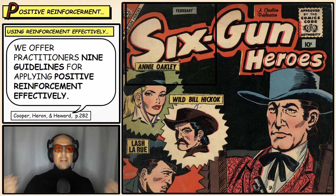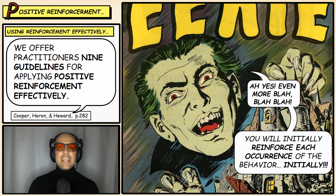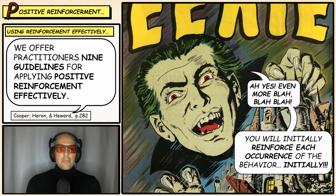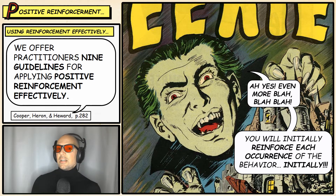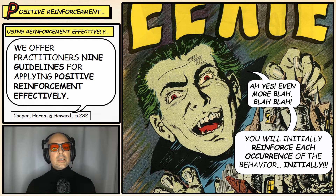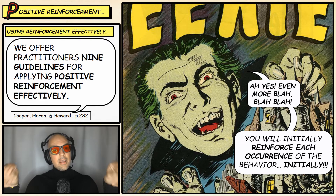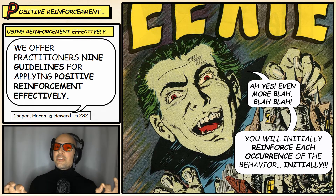Guideline number six: initially reinforce each and every occurrence of the behavior. The key word is initially — eventually we want to move to intermittent reinforcement, where not every occurrence is reinforced. However, when beginning behavior modification, it is most effective to reinforce each and every occurrence. Reinforce early, reinforce often — reinforce every single time at the start.